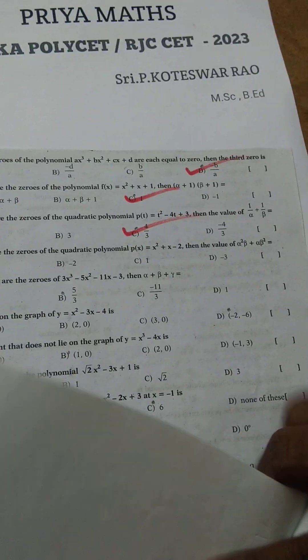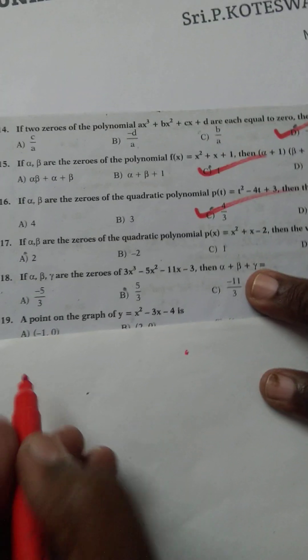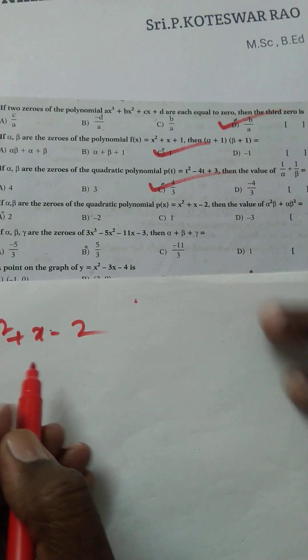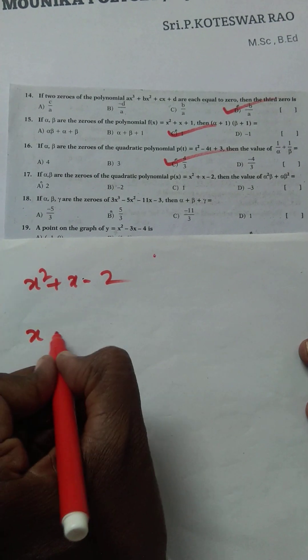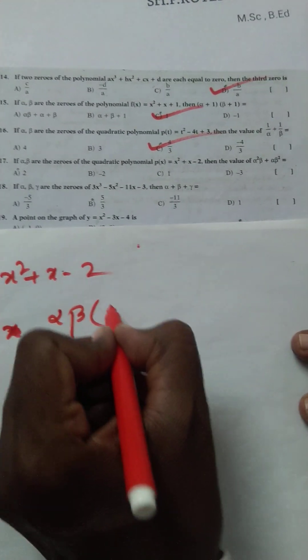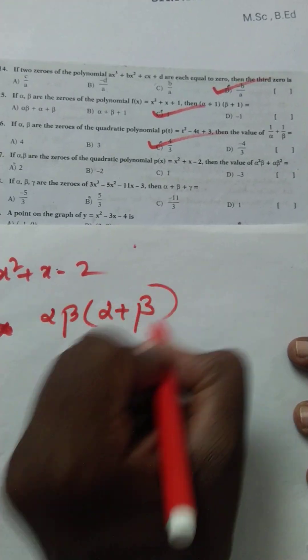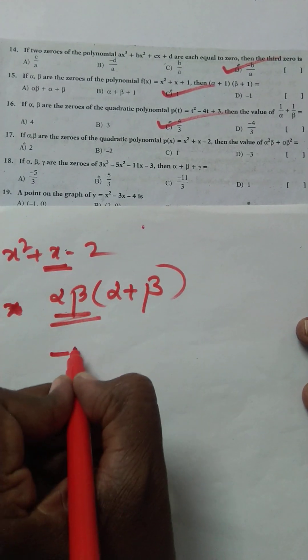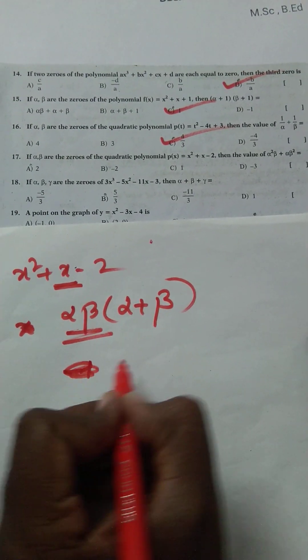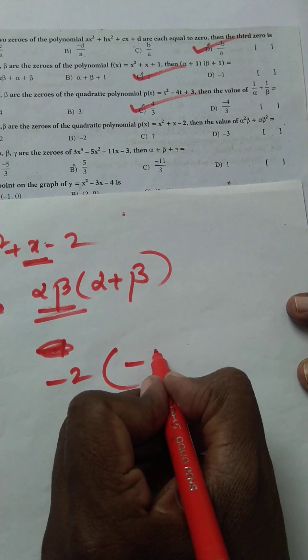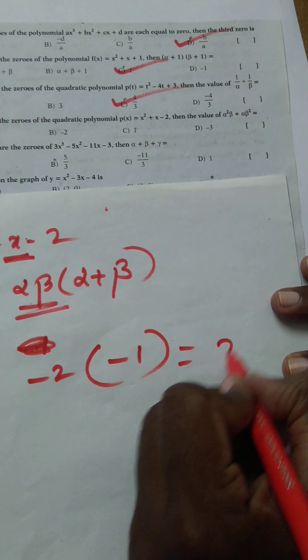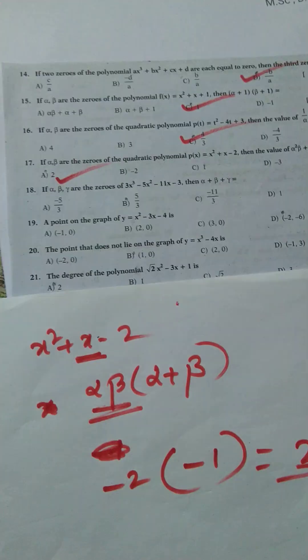For the equation x² + x − 2, alpha·beta = minus 2 by 1 and alpha plus beta = minus 1 by 1. So alpha·beta times (alpha + beta) = minus 2 into minus 1, which gives plus 2. The answer is plus 2 — that is the right option.